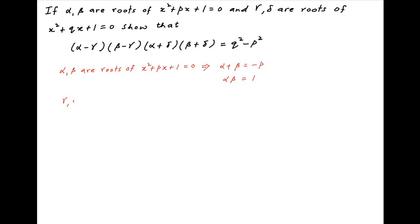We are also given that gamma and delta are the roots of the quadratic equation x² + qx + 1 = 0. Therefore, the sum of the roots gamma plus delta is equal to minus q, and the product of the roots gamma times delta is equal to 1.